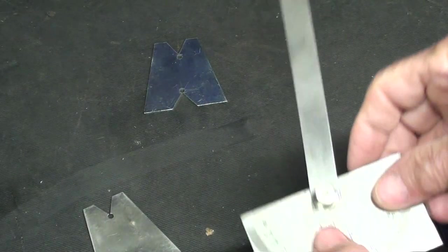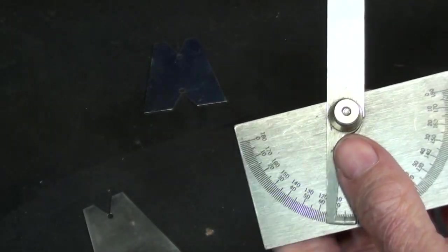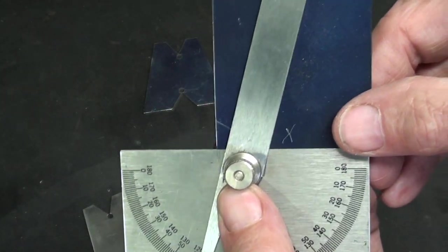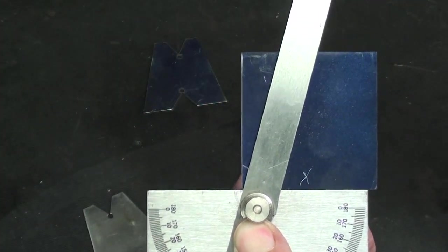So let's talk about protractors. Just about everybody has one of these, and they are perfectly usable. And it's already set to 15 degrees, and it would just be set on there right like that, right to the corner, and scribe it.